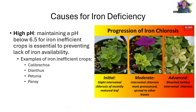Causes for iron deficiency. High pH — maintaining a pH below 6.5 for iron-inefficient crops is essential to preventing a lack of iron availability. Some of these non-efficient iron crops, such as calabacoa, dianthus, petunia, and pansy, we have to be very careful about that pH creeping too high, such as in high alkalinity areas, that pH shift going upwards. Shown here, we can see that progression occurring with that light interveinal chlorosis initially. Moderate — we start to see entire leaf chlorosis. And then in the advanced stages, we see bleaching with entire white leaves occurring.